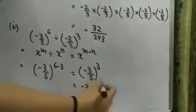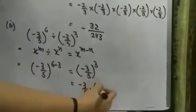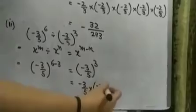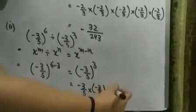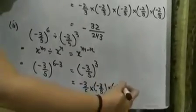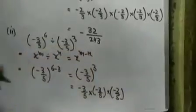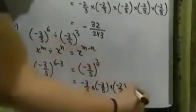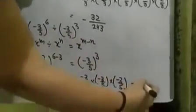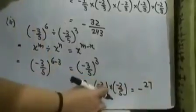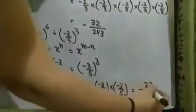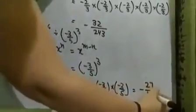Minus 3 by 5 multiplied by minus 3 by 5 multiplied by minus 3 by 5. Again, this is a negative number — look at the power, which is an odd number, so your result will be negative. 3 threes are 9, 9 threes are 27. 5 fives are 25, 25 fives are 125. So the answer is minus 27 by 125.